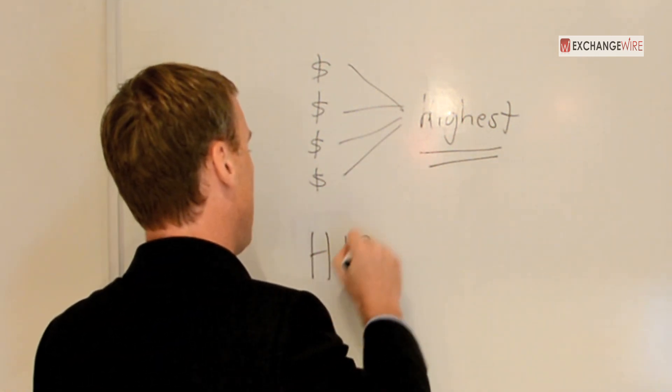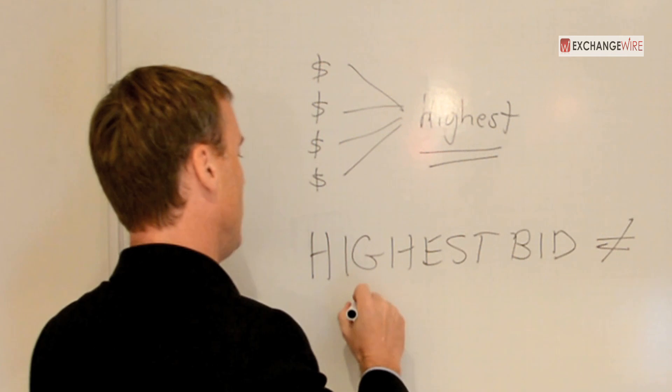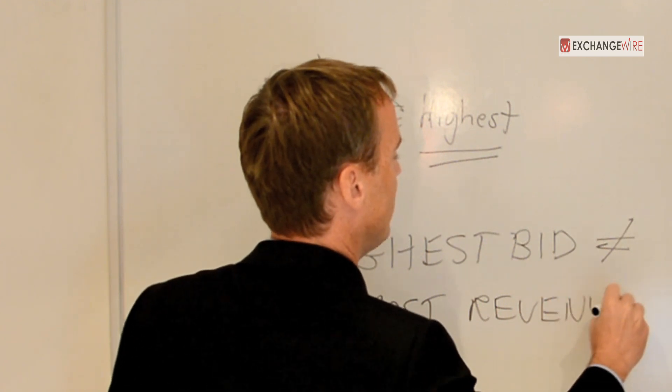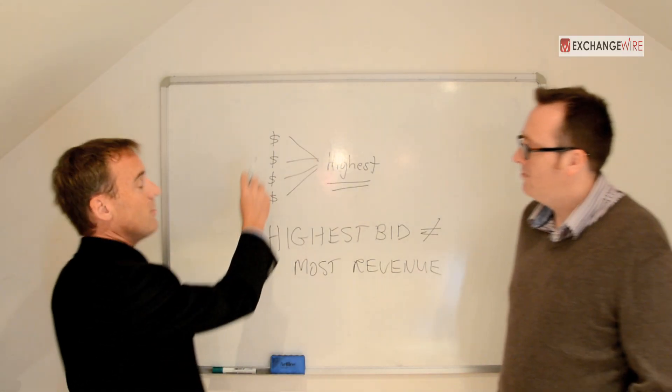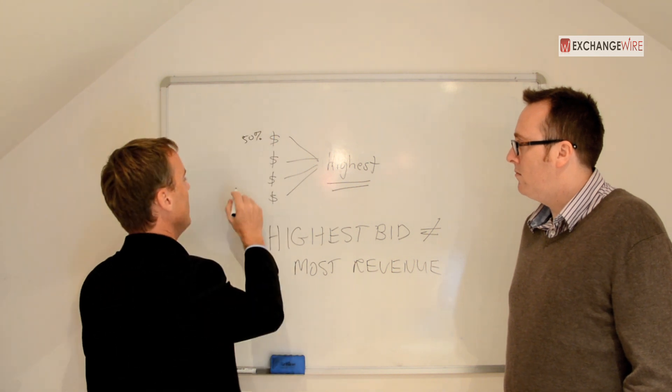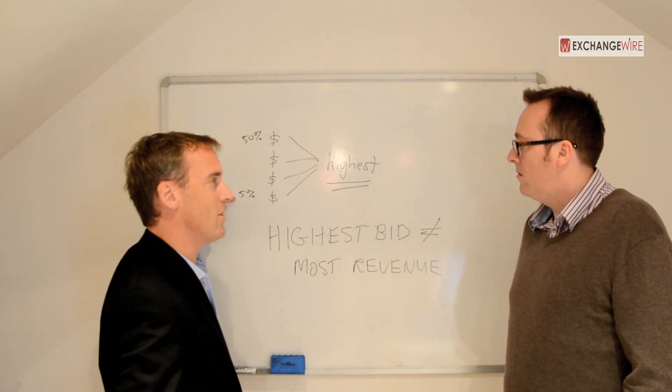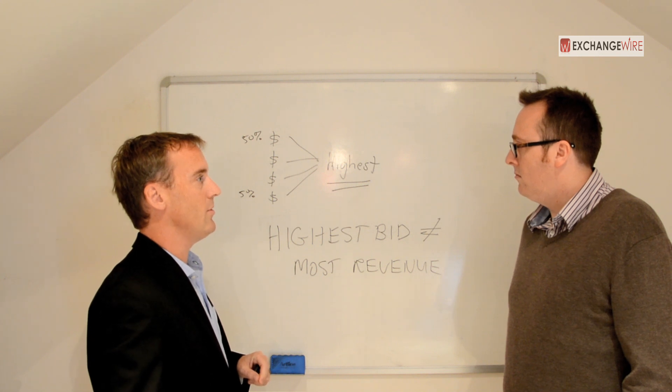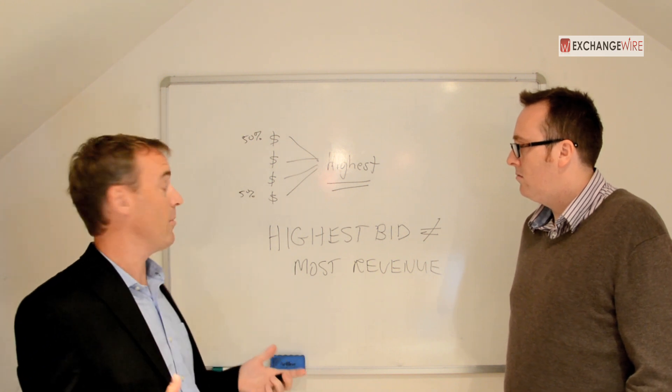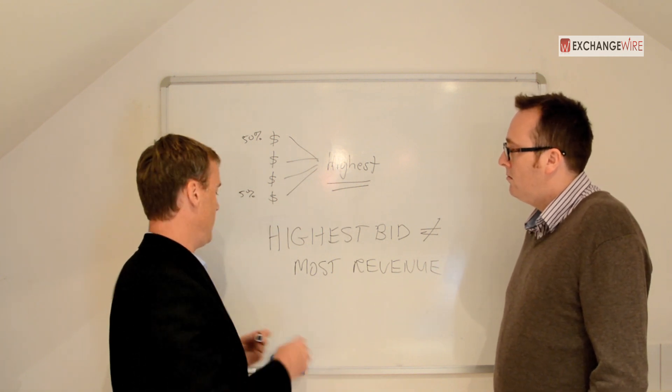The highest bid is not equal to most revenue for publishers unless you consider scarcity because some of this demand might be pretty common. It might be available 50% of the time. Some of it might be available 5% of the time. If all of this was uniform, then highest bid would be the right approach. But given the fact that you have very scarce elements of demand available in every impression, you want to take that into consideration.